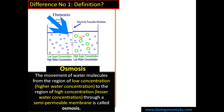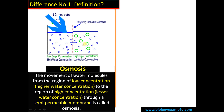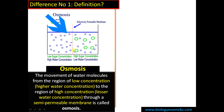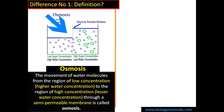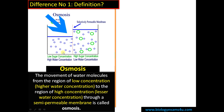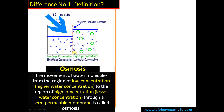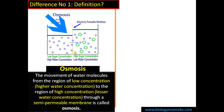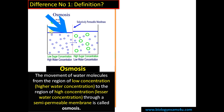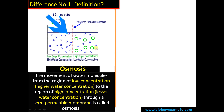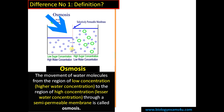Let's take one more example to fix the concept. Suppose solution A has low sugar concentration and solution B has high sugar concentration, and they are separated by a semipermeable membrane. Osmosis is the movement of water molecules from the region of low concentration to the region of high concentration through the semipermeable membrane. In terms of water potential, it is a movement of solvent or water molecules from the region of high water potential to the region of low water potential through a semipermeable membrane. Water potential simply means the amount of free water.